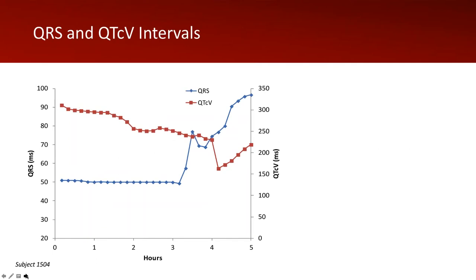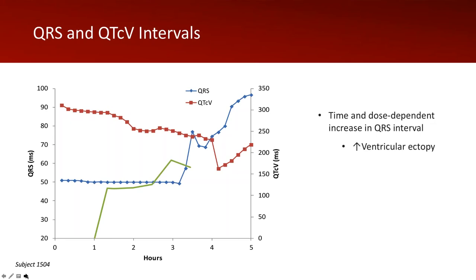QRS and QTCV were also presented: QRS on the left axis and QTCV on the right axis. QRS was absolutely stable until three hours into the experiment, at which point with higher concentrations it rapidly widened to almost 100 milliseconds. The time and dose-dependent increase in QRS was associated with the expected increase in ventricular ectopy. QTCV shortening is also an expected effect consistent with in vitro APD shortening shown in numerous experiments.